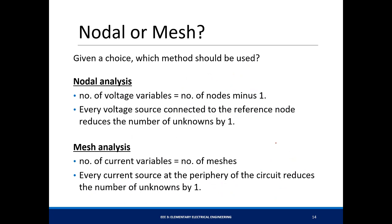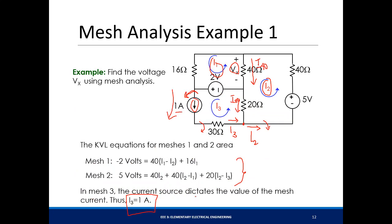Given a choice, which method would you use? It depends. The pro tip is: choose the method that gives you fewer unknowns. For nodal analysis, the number of unknowns equals the number of nodes minus 1. For mesh, it's the number of meshes. Every voltage source connected to the reference node reduces unknowns by 1 in nodal; every current source connected to the periphery reduces unknowns by 1 in mesh. In the previous example, we only had two unknowns I1 and I2, since I3 was dictated by the current source.